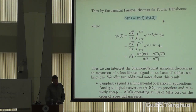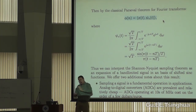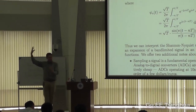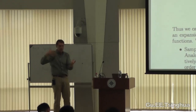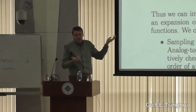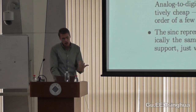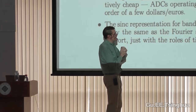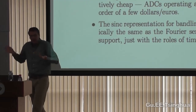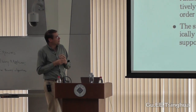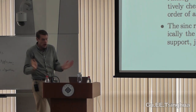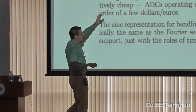I talk about the sampling theorem in almost every signal processing course I teach at Georgia Tech. I view it as the fundamental theorem of digital signal processing — the fact that you can capture a band-limited signal with equally-spaced samples and not lose anything. After the existence of the FFT, it's probably the second most important point about all of DSP. The idea of sampling a signal is something you can definitely implement in hardware — analog-to-digital converters operating at tens of megahertz cost just a few dollars.